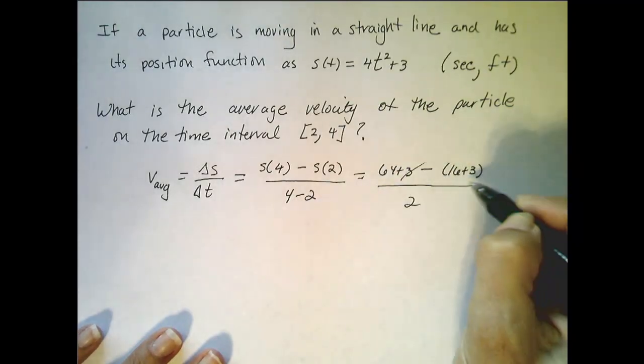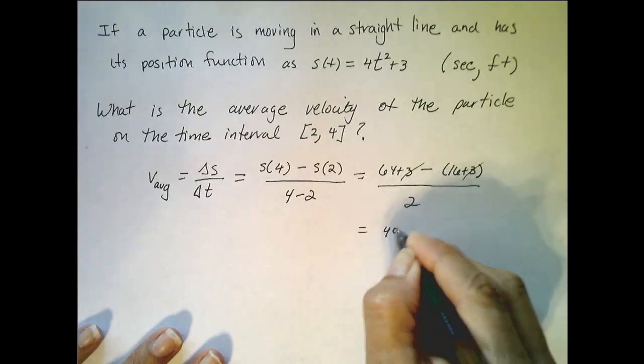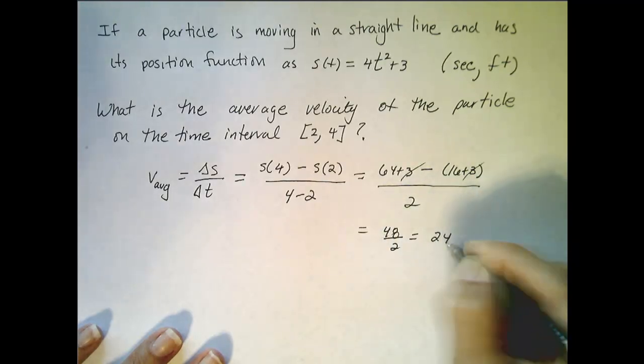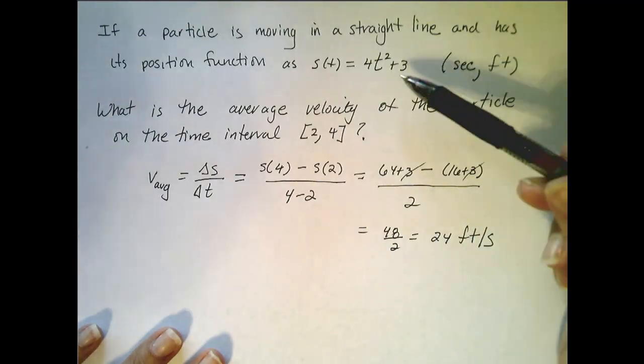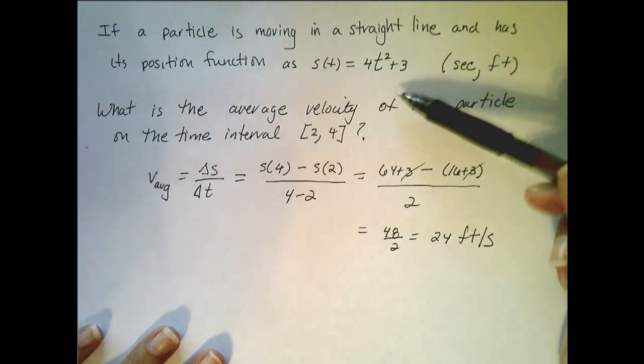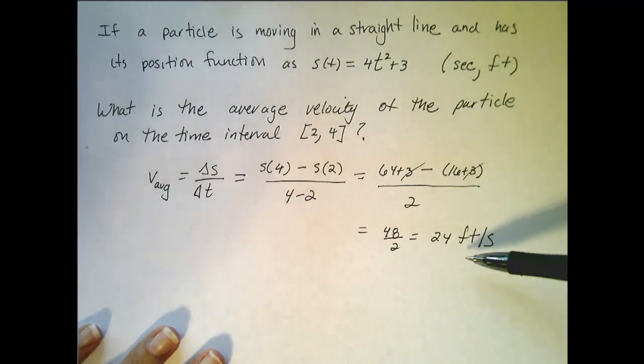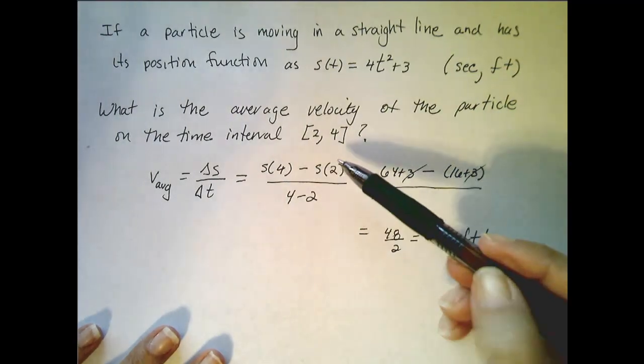Doing some quick calculations, I see that I get 48 divided by 2, or 24 feet per second. So my particle travels at an average velocity of 24 feet per second on the time interval 2 to 4.